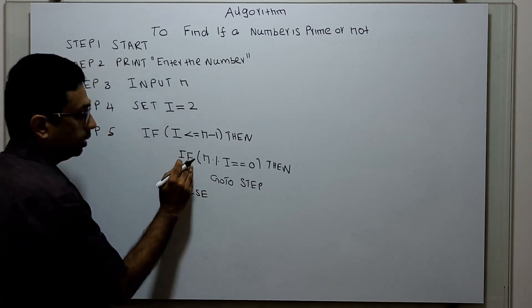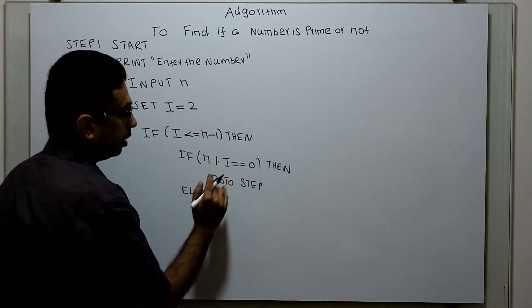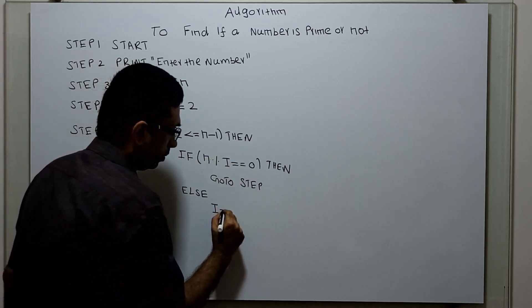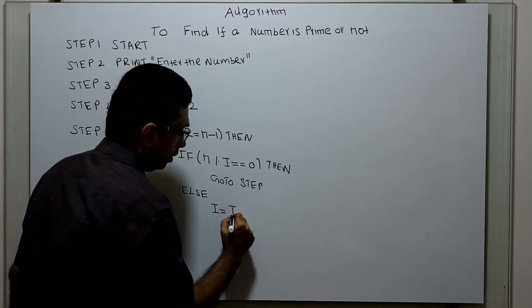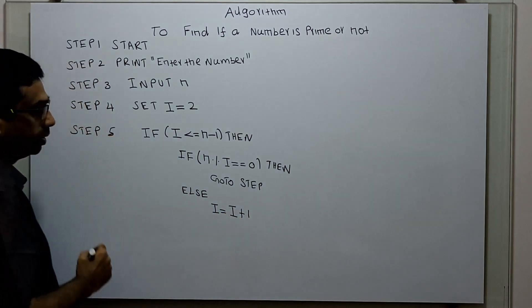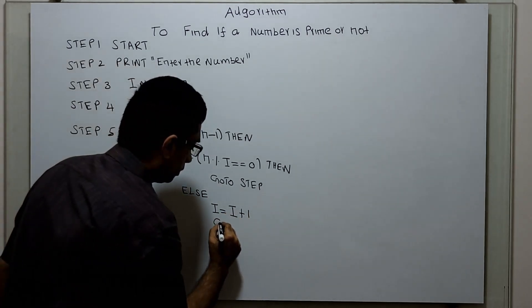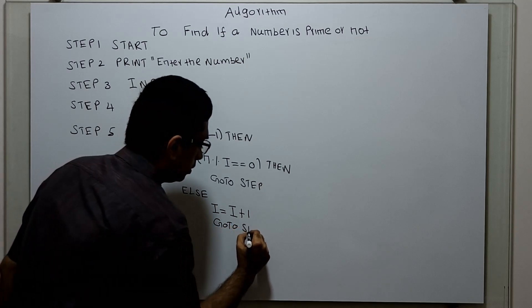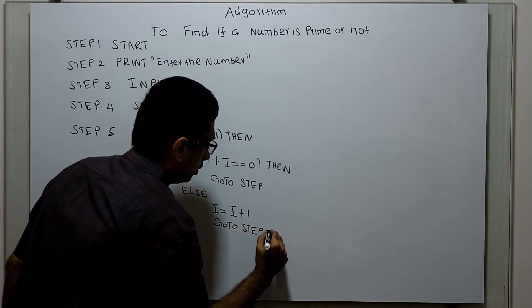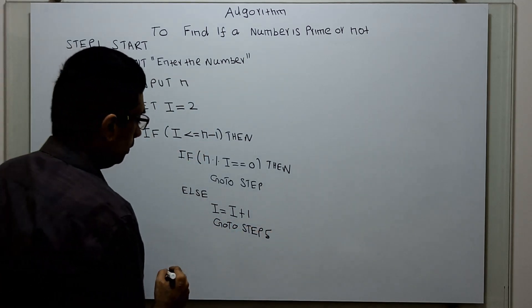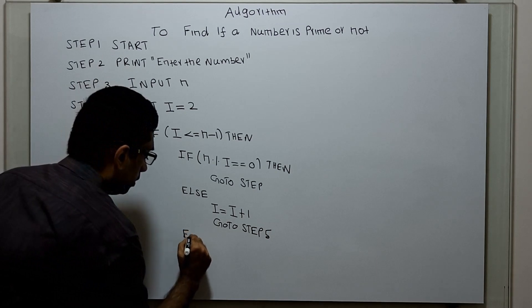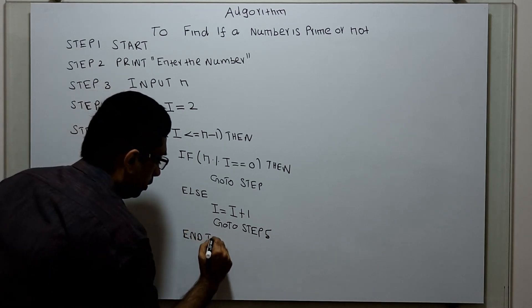This is the else of the inner if statement. If n modulo i is not equal to 0, I am incrementing i equal to i plus 1, and going back to step 5.